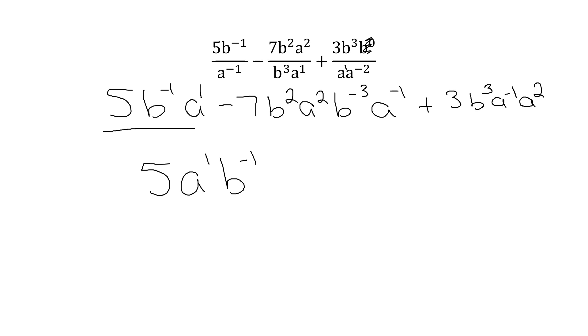Now this second term, though, I can simplify. So what I'm going to do, just within this term, is I'm going to find my a's, and I'm going to find my b's. My coefficient stays. a squared, a negative 1, becomes a^1. Because remember, I add them. b^2, b^-3, 2 minus 3 is negative 1.